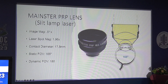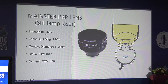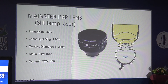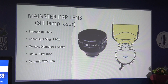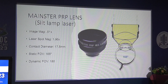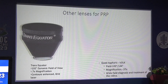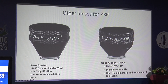This is the Mainster PRP lens by Ocular, the most common lens used for photocoagulation. The image magnification of this lens is approximately 0.5, so the laser spot magnification becomes 1.96. If you set parameters to 200 microns, your actual burn on the retina will be approximately 400 microns. It gives 165 degrees of field. There are also other lenses by Volk: the equator lens for grid laser, and the quadraspheric lens for pan-retinal laser.